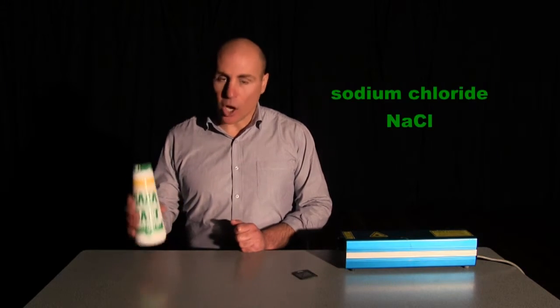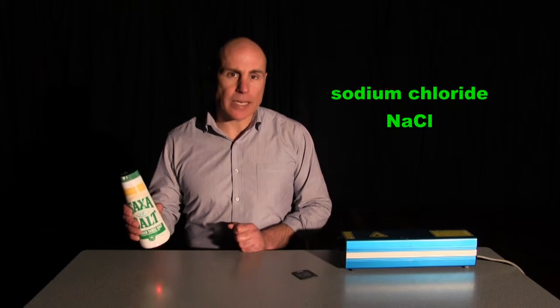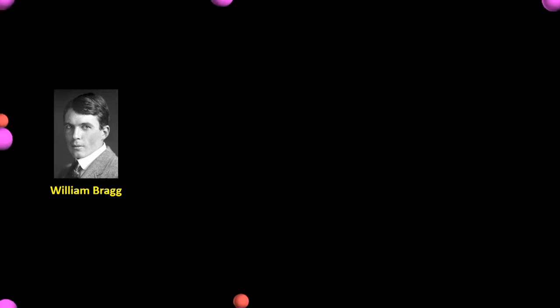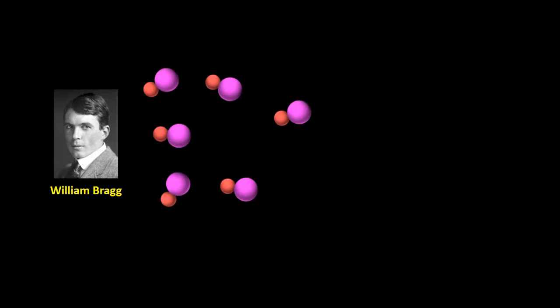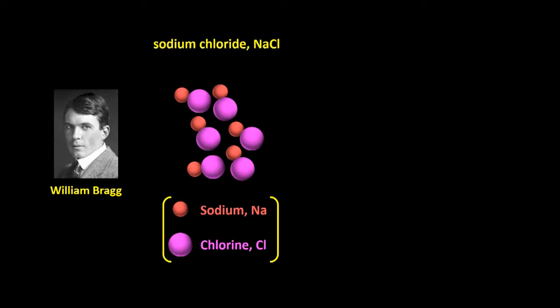In 1913, Bragg used X-ray crystallography to work out the structure of sodium chloride, NaCl. Though it was commonly believed that compounds exist as small groups of atoms, he discovered that this was not the case for NaCl.